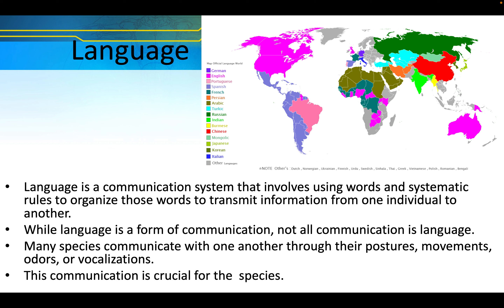Language is a communication system that involves using words and systematic rules to organize those words to transmit information from one individual to another. While language is a form of communication, not all communication is language. Many species communicate with one another through their postures, movements, odors, or vocalizations — this communication is crucial for the species.